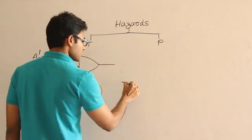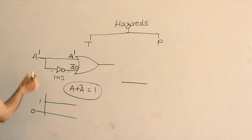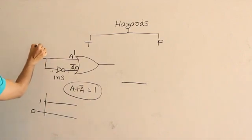So assume that output of this signal is going to be 1 like this. And suddenly what you did is, you change the value of A from 1 to 0.